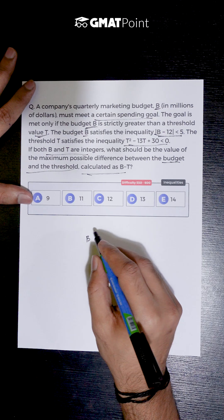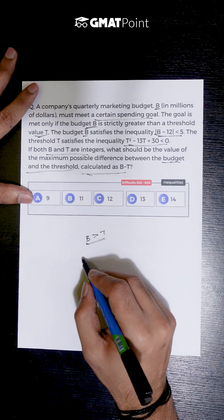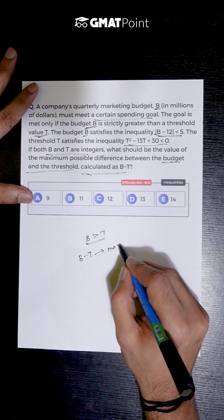Basically, in the question we are given that the budget is strictly greater than the threshold value, and we are asked to calculate the maximum possible B minus T value.